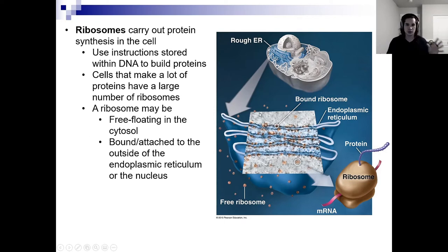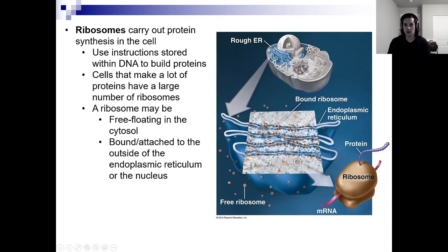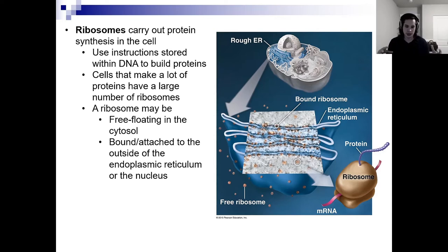Some ribosomes are floating around in the cytosol, and some are bound to the rough endoplasmic reticulum — kind of like the construction site of the cell. It's usually contiguous with the nucleus, which makes sense because your construction site would be proximal to the area telling you to create proteins. The nucleus is a database of many different ways to create proteins. The rough ER is an ideal environment for protein synthesis — it has all the ideal enzymes and the ideal pH for protein folding.